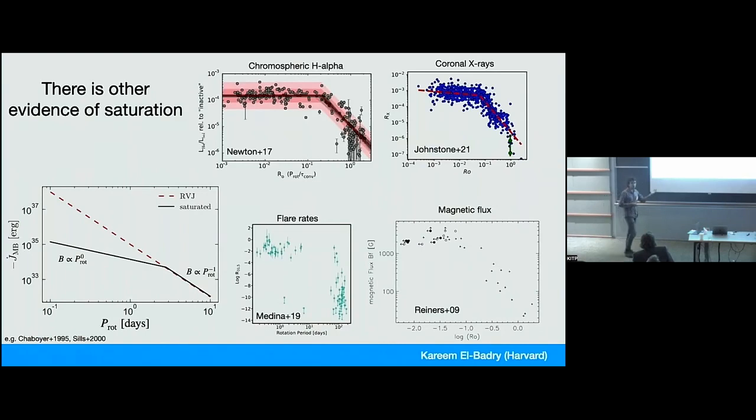And there are lots of independent pieces of evidence that this might happen from observations of single stars. Things like the H-alpha luminosities, the X-ray luminosities, the flare rates, magnetic flux observed for single stars. They all increase at short periods. For slow rotators, they increase as you spin it up, and then they reach a plateau.